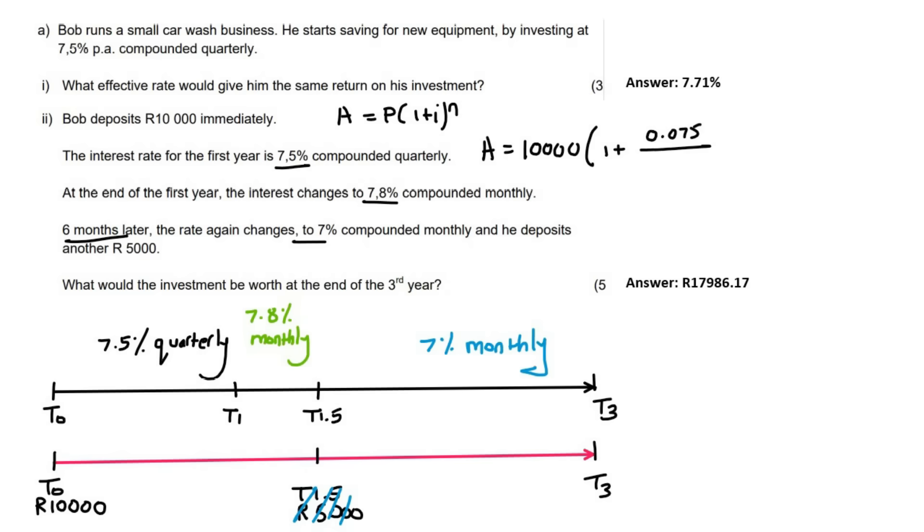So the first interest rate is just going to be quarterly, so that's going to be 0.075. Now, you might say 7.5%. That's absolutely fine if you do it like that on your calculator, over 4. And this one's only going to be for one year, right? And so that's going to be a 4 over here because it's 1 times 4. Then I hope your teacher also explains it like this, but when the interest rate changes, you just open up another bracket. In fact, we're going to write that a little bit smaller. So the next one is now this green monthly one, and so that's going to be 1 plus 0.078.